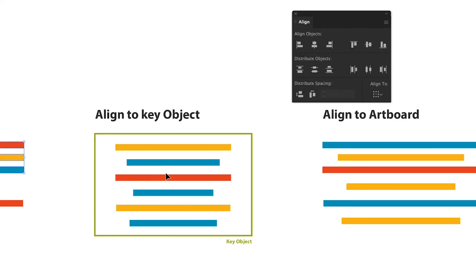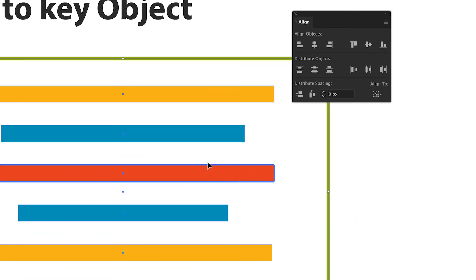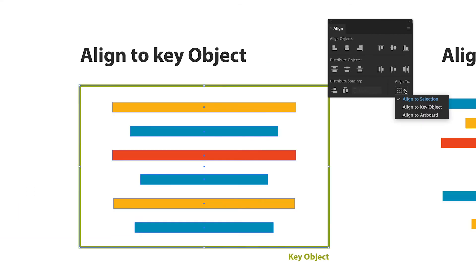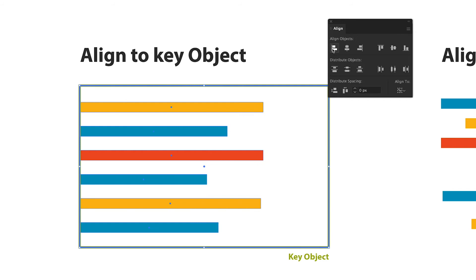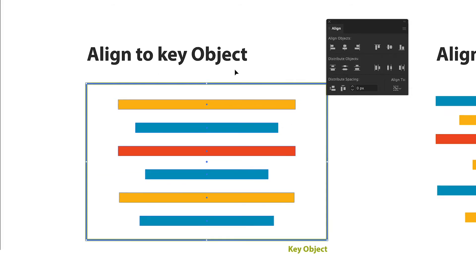Let's align to a key object. A key object is the object we select to be the main point of alignment for all our items. We're going to take all the elements including the green square, because this green square is going to be our key object. Select all of them and go to align to key object, then select the square as the key object. The key object is highlighted with a thicker blue stroke so you can differentiate it. We can align them to the left, to the right, to the center, and they'll all be aligned relative to the green square — our key object.